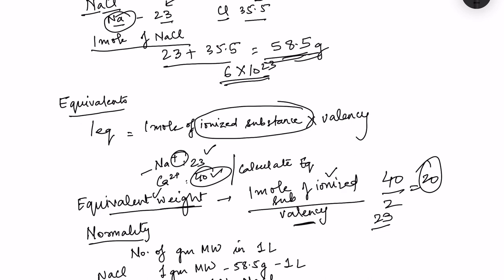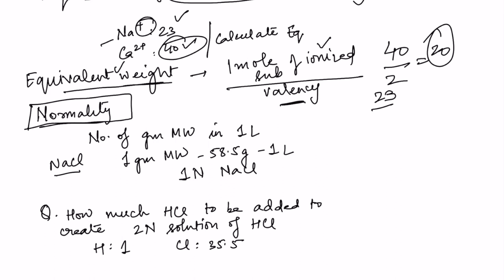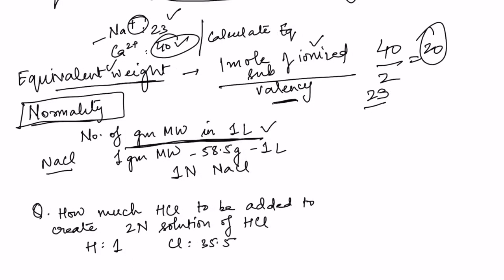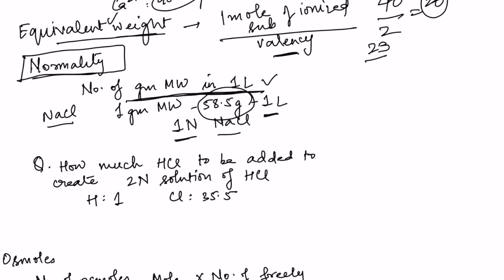Next concept: normality. Normality is the number of gram molecular weights in one liter. To prepare a 1N NaCl solution, we add 58.5 grams in 1 liter. For a 2N solution of HCl, a 2N solution means 2 gram molecular weights in 1 liter, or 2 moles of the substance in 1 liter.